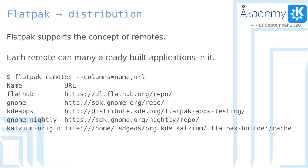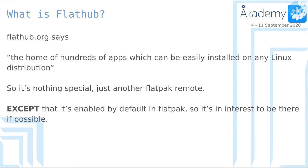So here we introduce the other thing I wanted to talk about, which is Flathub. What is Flathub? Flathub.org says it's the home of hundreds of apps which can be easily installed on any Linux distribution. So it's really nothing special — it's just another Flatpak remote. But the thing with Flathub is that it's enabled by default in Flatpak. So every single Flatpak installation has Flathub enabled. When you do Flatpak search, it will search in there. We want to be in Flathub because otherwise it's harder to find when you're not on the default list.